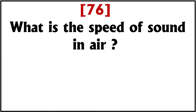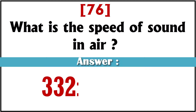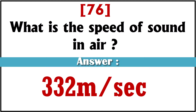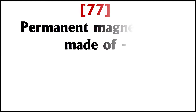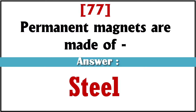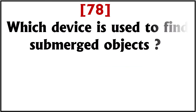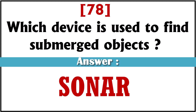What is the speed of sound in air? Answer: 332 meters per second. Permanent magnets are made of? Answer: Steel. Which device is used to find submerged objects? Answer: Sonar.